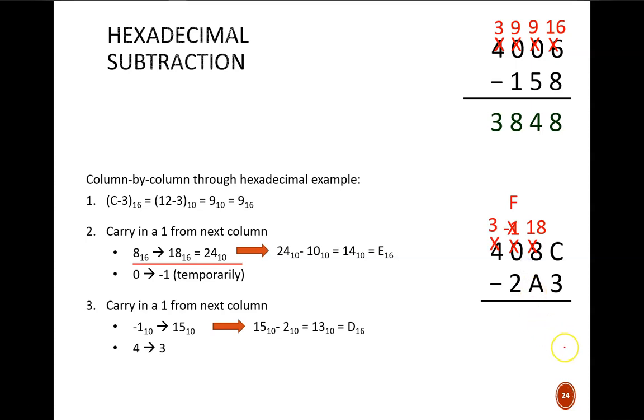Now the columns are all set up for direct subtraction. C minus 3 gives 9. In decimal the next column reads 24 minus 10 equals 14. We write that 14 as E in hexadecimal. Next column is 15 minus 2 equals 13. And the final column is 3 minus nothing equals 3.